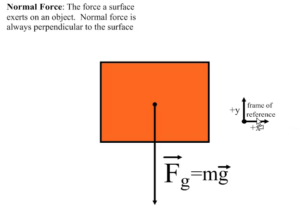We take our frame of reference to be up as being positive and to the right as being positive, and we know the acceleration due to gravity is negative 9.8 meters per second squared.